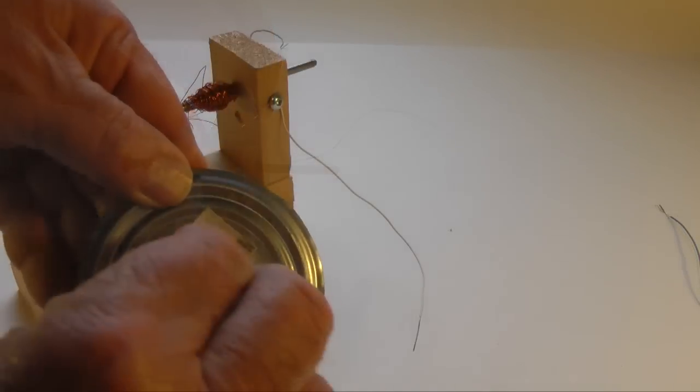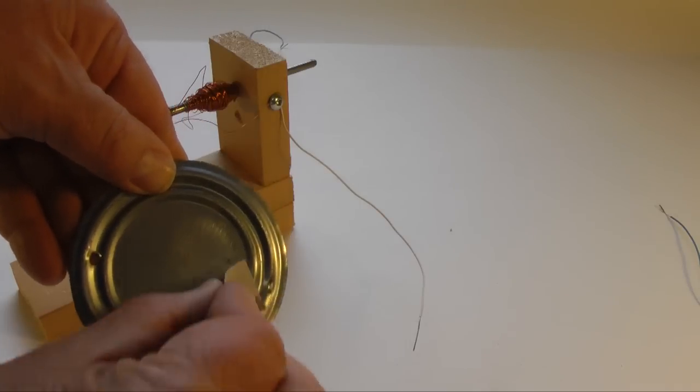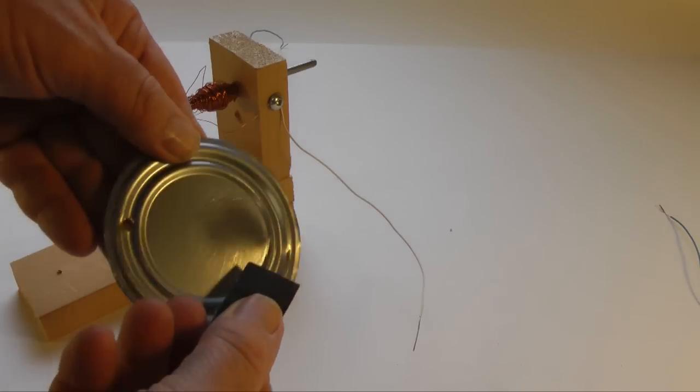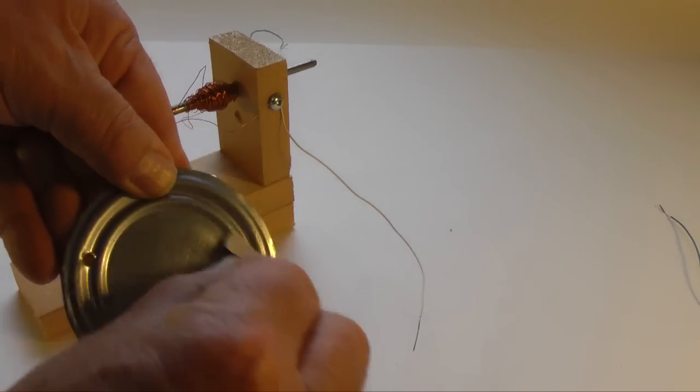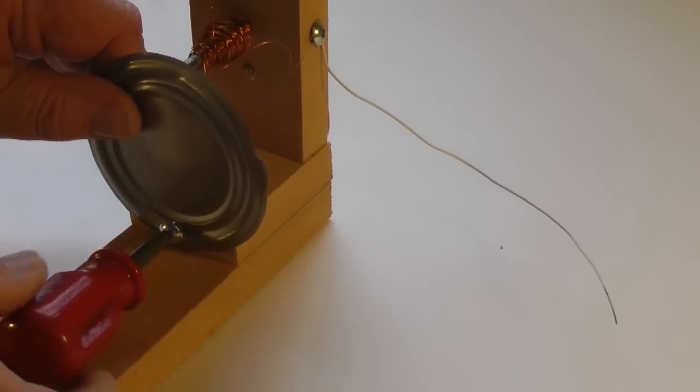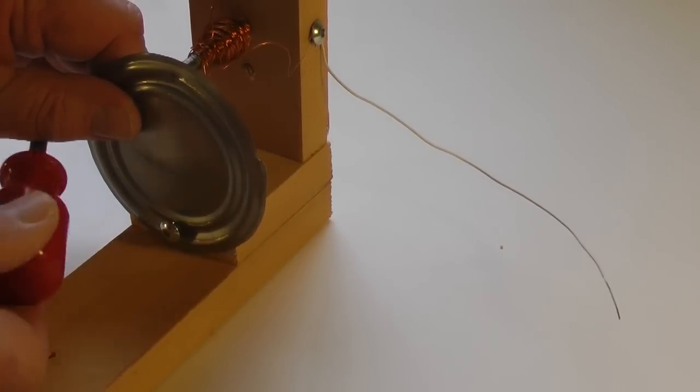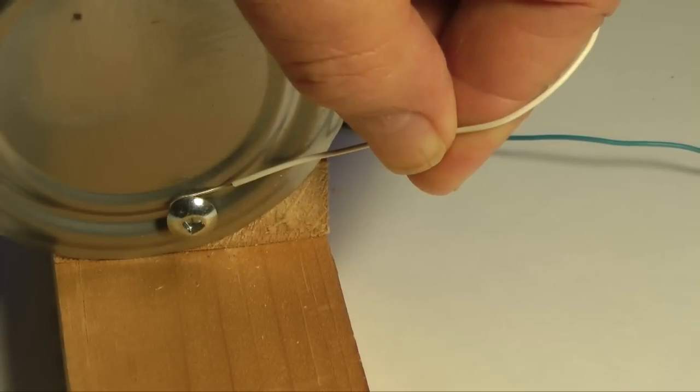The metal lid from cans often have a clear coating on them. This has to be sanded off at any points where you need an electrical contact. I held the metal lid in place with a screw, at the same time connecting one wire from the magnetic coil.